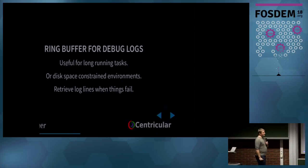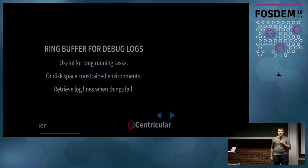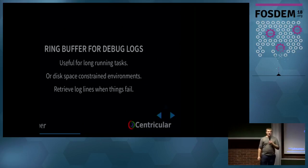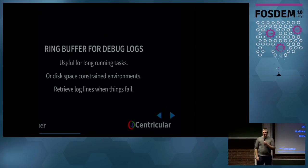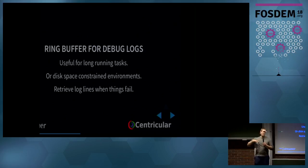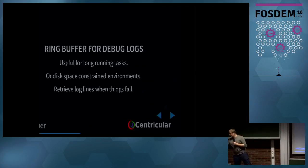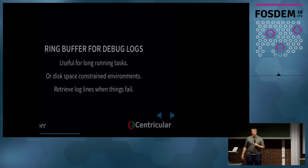We have a ring buffer for debug logs. If you enable debugging in GStreamer, you can easily accumulate hundreds of megabytes or even gigabytes of debug logs. Sometimes people have problems — after three days of streaming they run into an error — and you can't really make a debug log in that situation. So we now have a ring buffer for the debug logs, and when you find a problem you can just grab the last few megabytes out of it. It's really simple but no one had done it before.